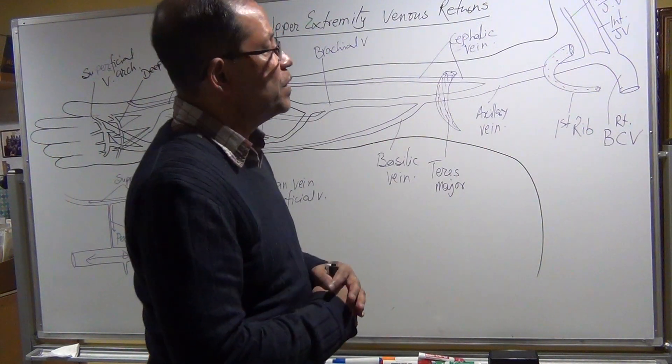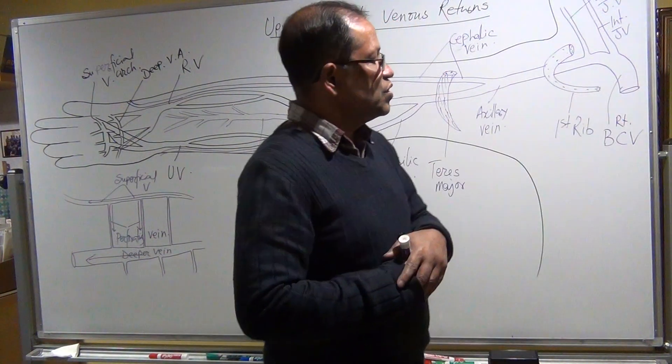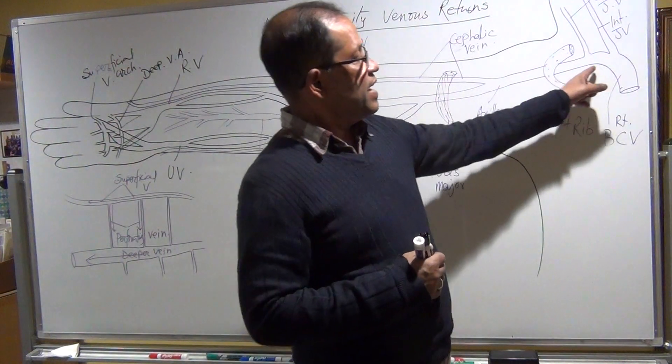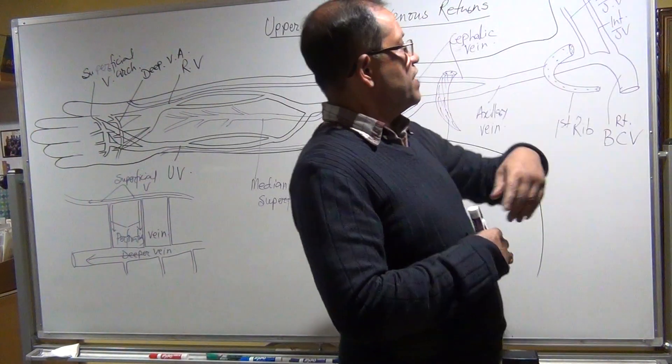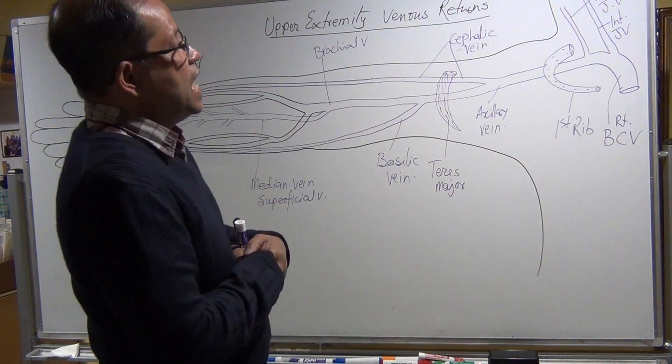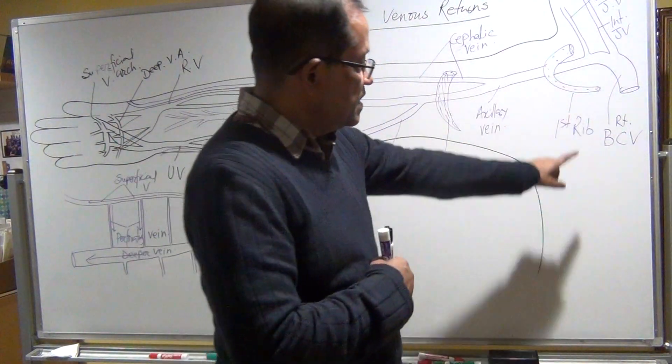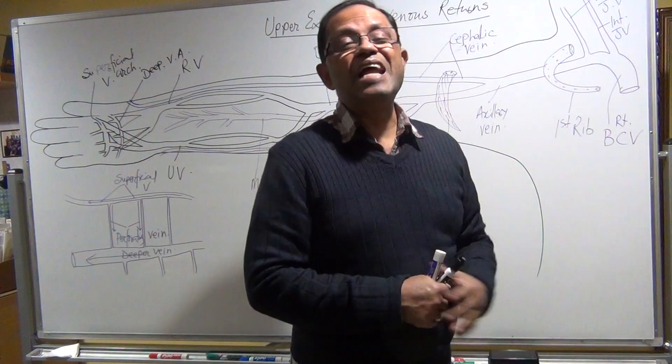Now, the brachiocephalic vein is considered as a central vein. The subclavian vein and jugular vein are considered central veins. These veins, along with the IVC and SVC, are considered central veins because they are